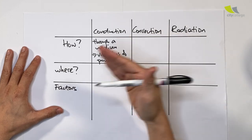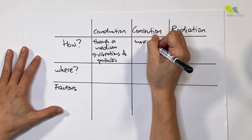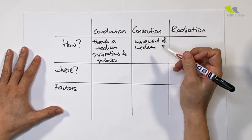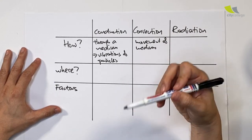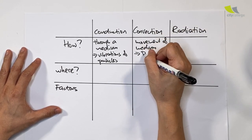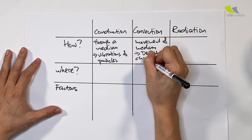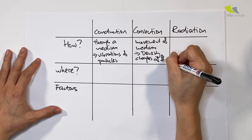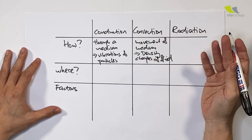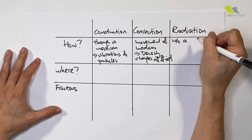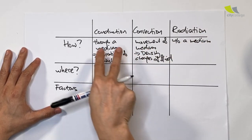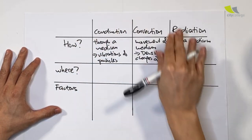Next, convection is the transfer of heat through the movement of the medium. In order for convection to take place, the medium needs to be able to move or flow. This is driven by density changes, and in this case the medium will most likely be a fluid or a gas. Lastly, radiation is the transfer of heat without a medium. So the key concept across all three is the role of the medium: conduction goes through it, convection is by the medium moving, radiation needs no medium.